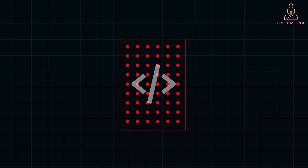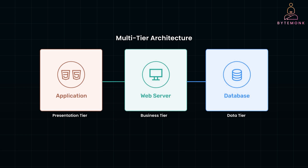To make things easier to manage, developers moved to multi-tier architecture, where the application was split into layers. The presentation layer handled user interfaces, the logic layer took care of business rules, and the data layer stored and retrieved information. While this separation improved things, it was still centralized — all the components were tightly connected, meaning large, complex systems were still hard to evolve and scale.